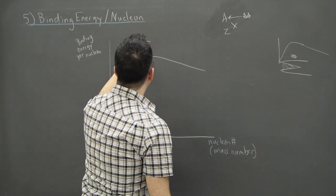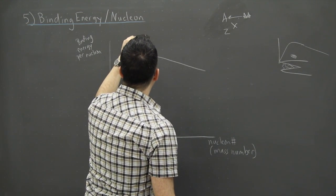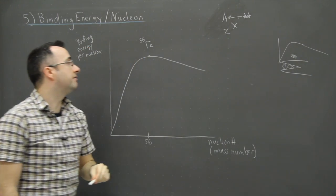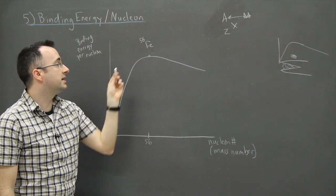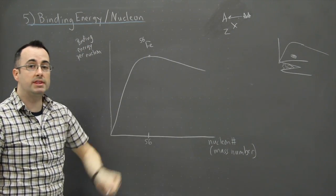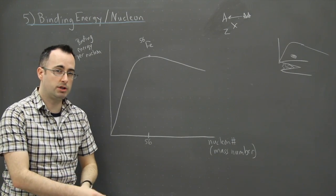The reason is that this is actually iron 56. That's the key thing right here, is that we have iron 56. That seems to be the one with the highest binding energy per nucleon.